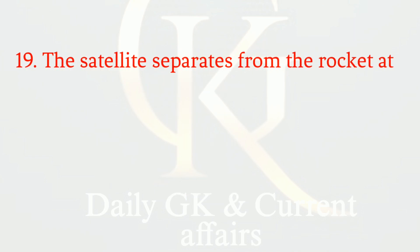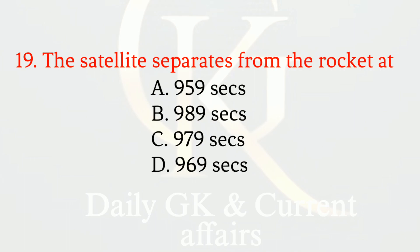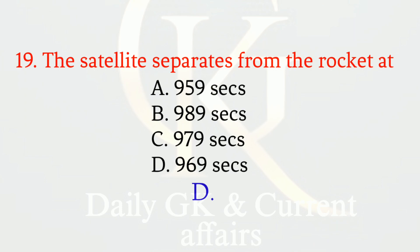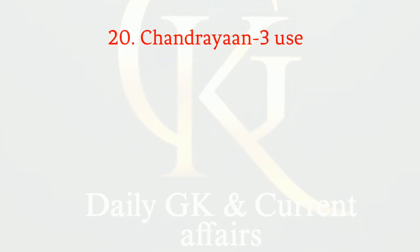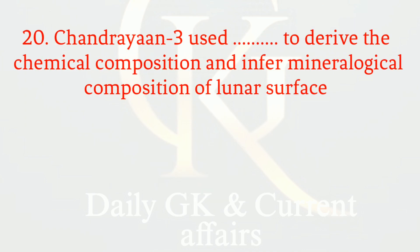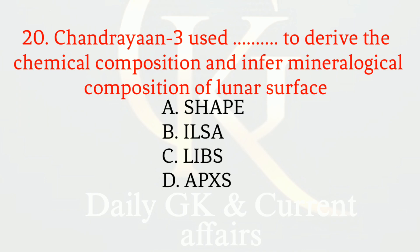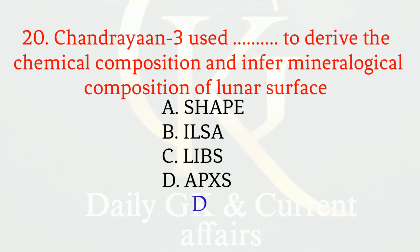The satellite separates from the rocket at — the correct option is D: 969 seconds. Chandrayaan-3 uses APXS to derive the chemical composition and infer the mineralogical composition of the lunar surface — the correct option is D: APXS.